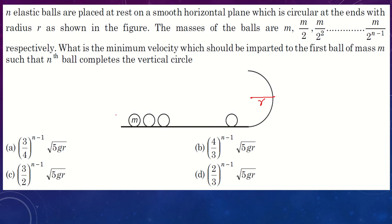The question asks what is the minimum velocity required to be imparted to the first ball. If the first ball is given velocity u, it will collide with the second ball, which collides with the third, and so on. Finally the nth ball must complete the circle. So we need to find the velocity of each ball and then determine the minimum velocity for the first ball so the last ball can complete the circle.